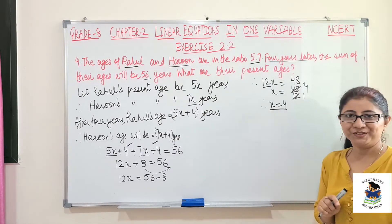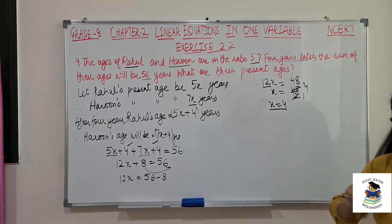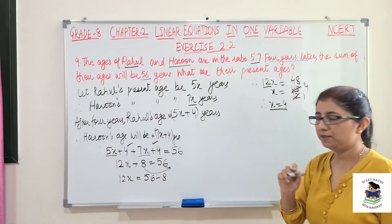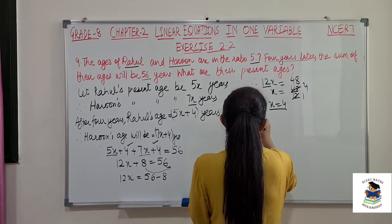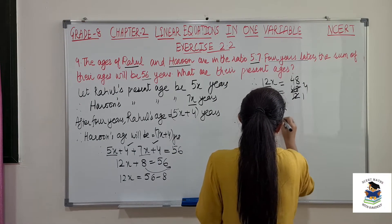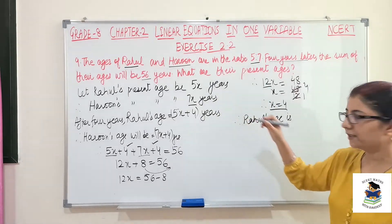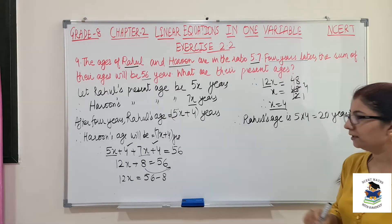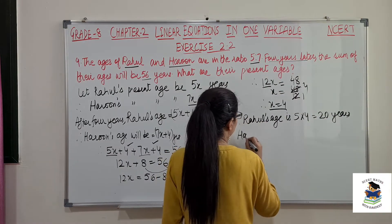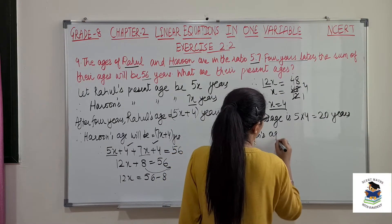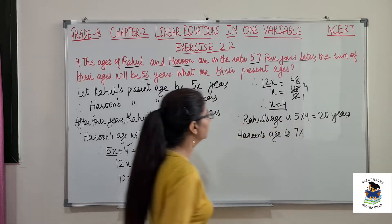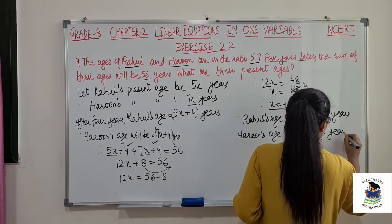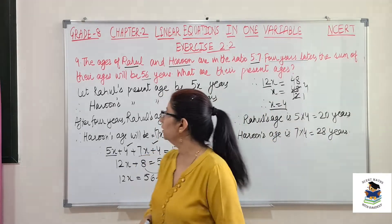Now x is not the age — we need to find their present ages by substituting x equals 4. Rahul's present age is 5x, so 5 into 4 equals 20 years. And Haroon's age is 7x, so 7 into 4 equals 28 years. That completes question number 9.